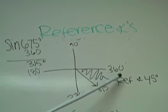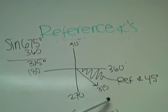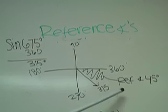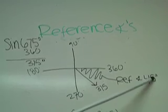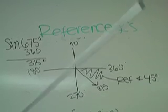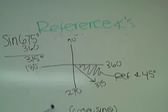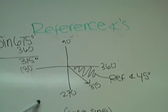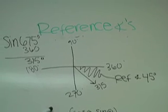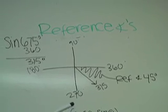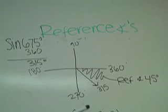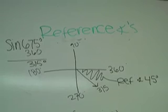So you subtract 360 and 315, and you get the reference angle 45. Usually all of the reference angles have to be 30 degrees, 45 degrees, 60 degrees, or 90 degrees.